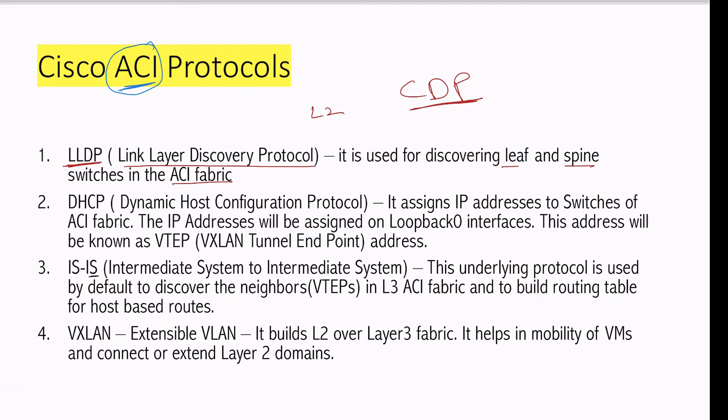Now I'll move towards the second: DHCP, Dynamic Host Configuration Protocol. So this DHCP is basically used for allocating the IP address to each device which is there in the ACI fabric. This is a layer 3 fabric, so we need to have IP addresses assigned. How will that happen? With the help of DHCP.